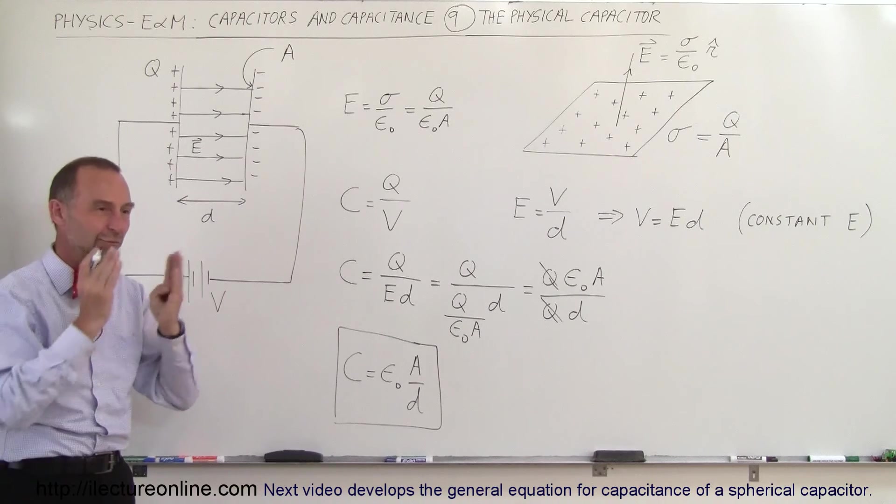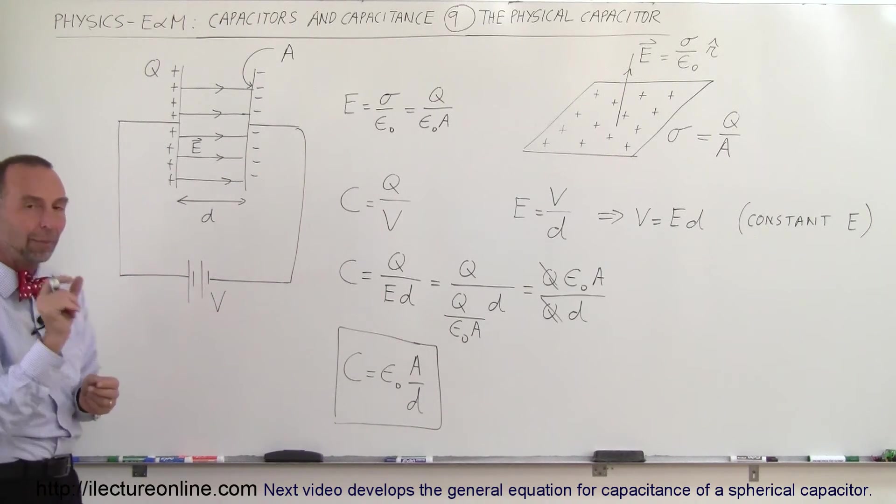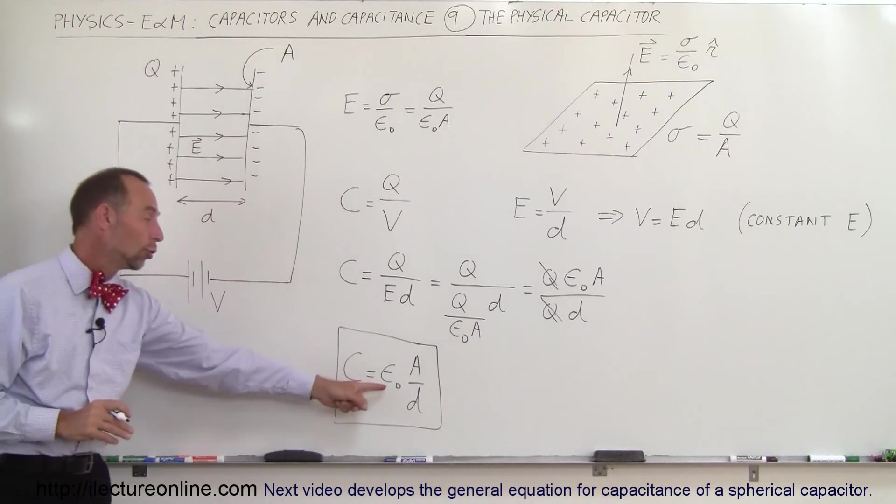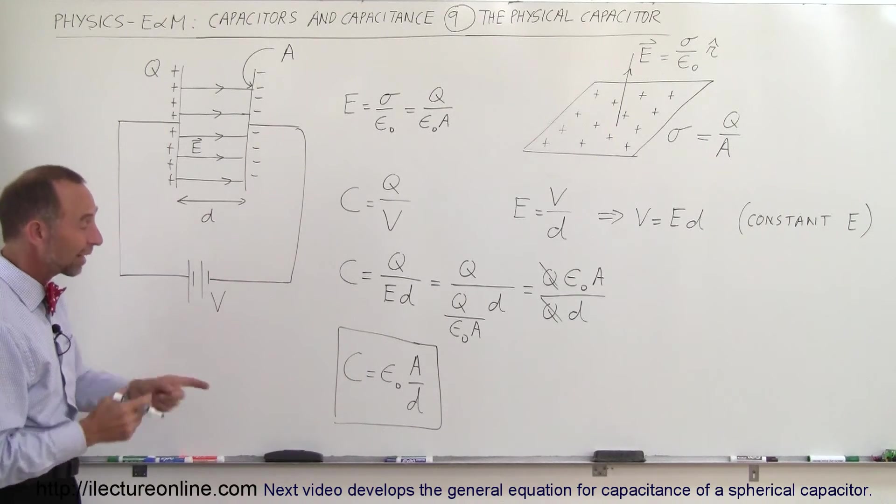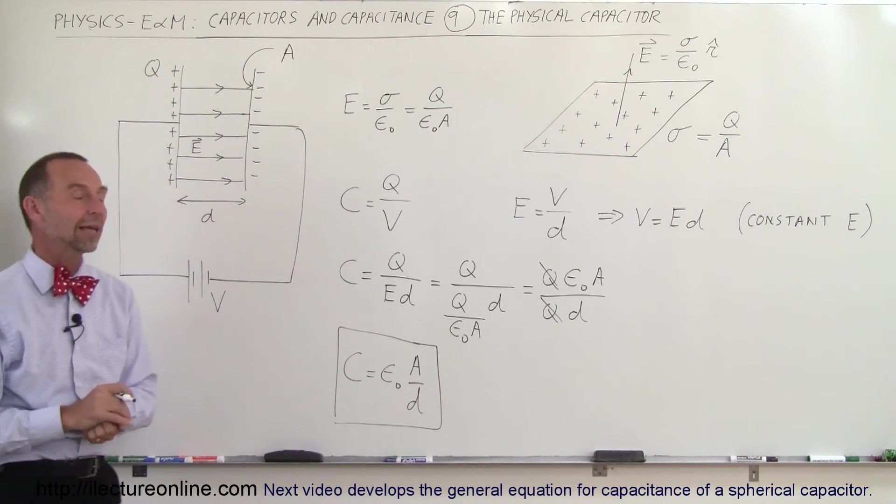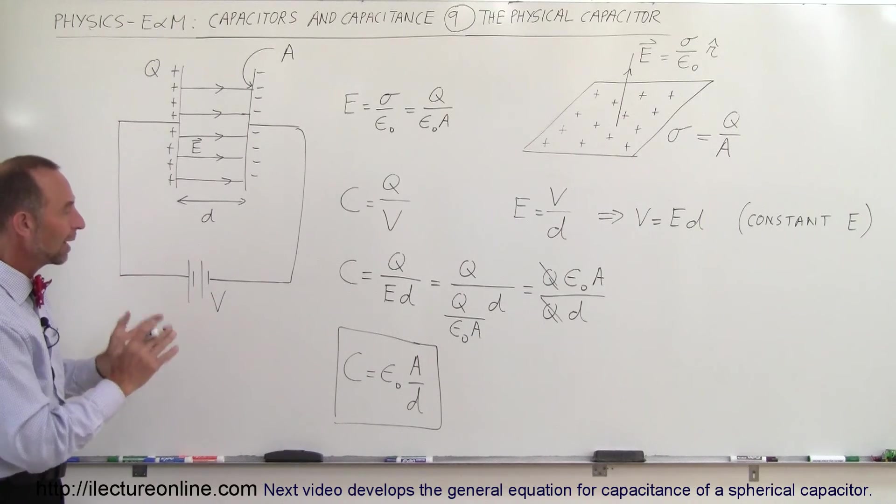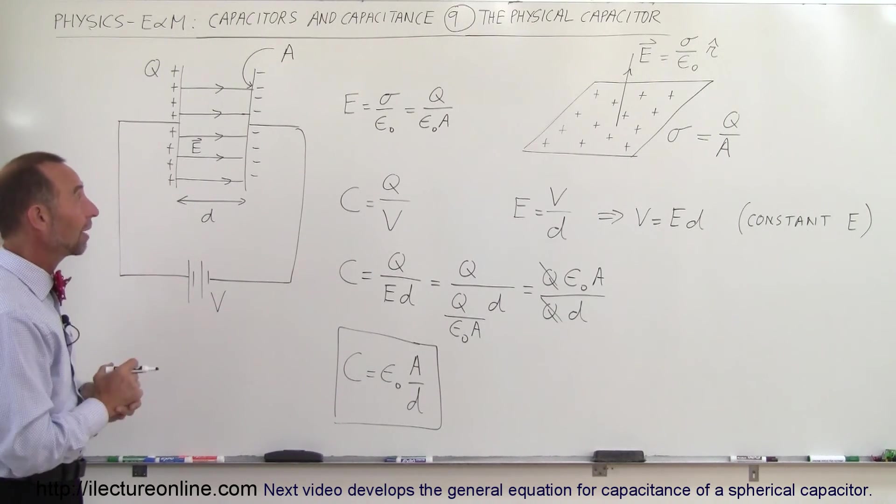Now that's only true for a capacitor where the plates are side by side, where you have rectangular plates of area A separated by a distance D, where there's no dielectric in between. When there's a dielectric, then something's going to change about the epsilon sub-naught, but right now that would be the physical capacitance.